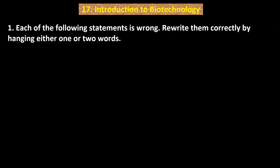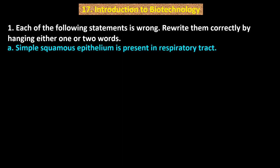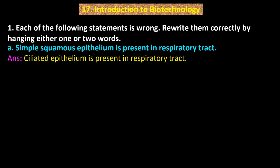Question number 1. Each of the following statements is wrong. Rewrite them correctly by changing either one or two words. Point A: Simple squamous epithelium is present in respiratory tract. Answer: Ciliated epithelium is present in respiratory tract.